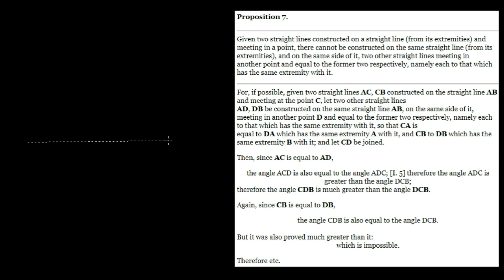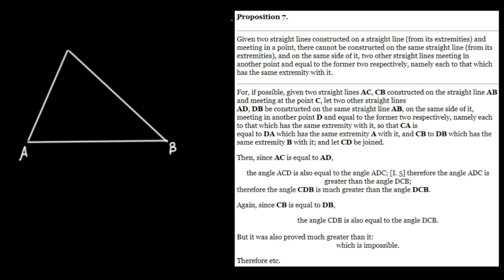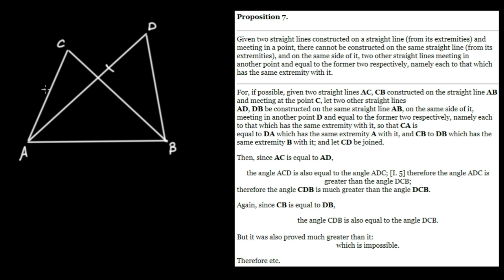Let's construct what he's talking about. Let's say we have some line segment which Euclid is going to call AB. We're going to build two other line segments off of that and they're going to meet together in a point C. Now what he's saying is: suppose we build off of the same line segment AB two others, and they meet in some other point — let's call it D.